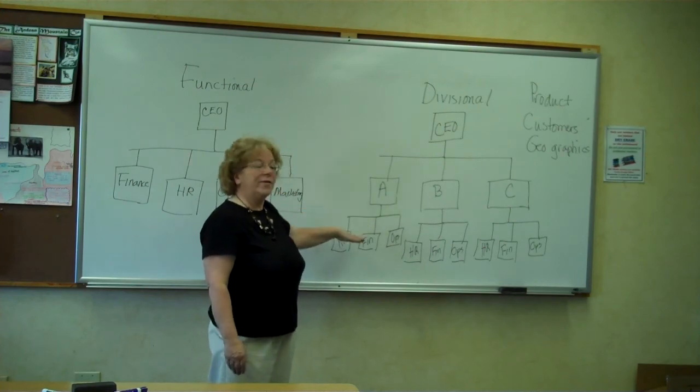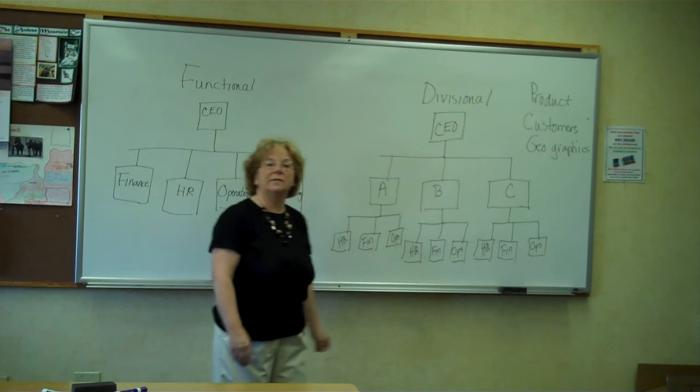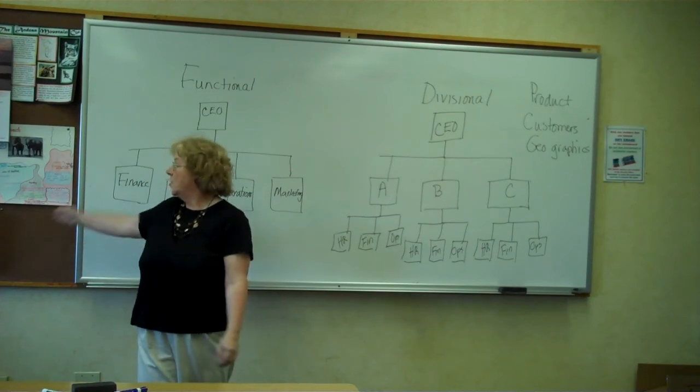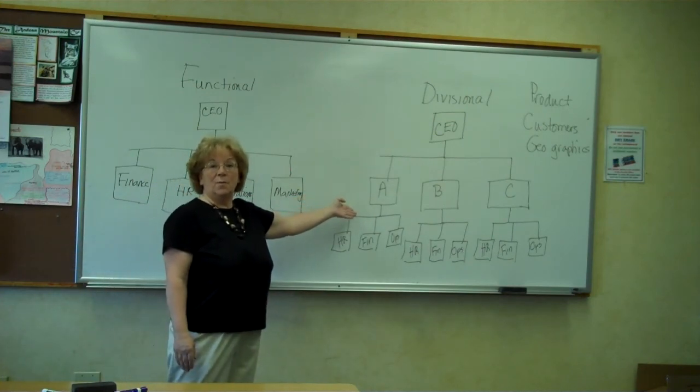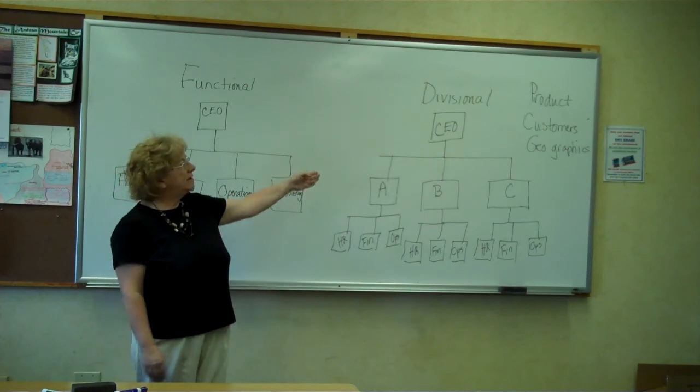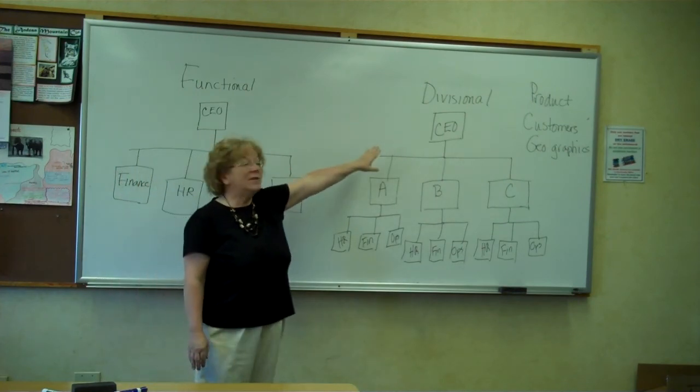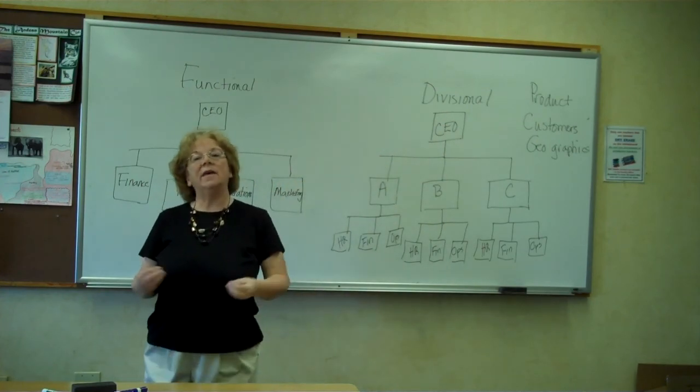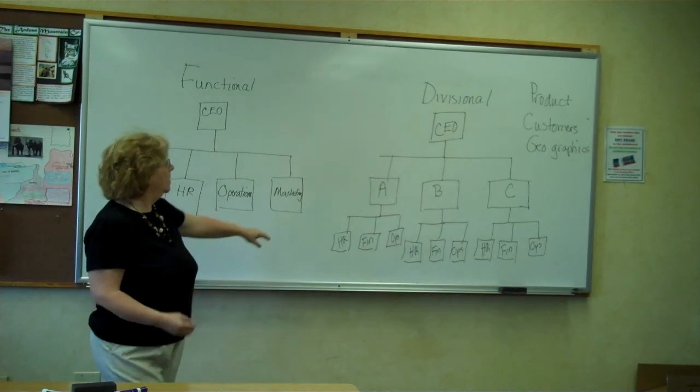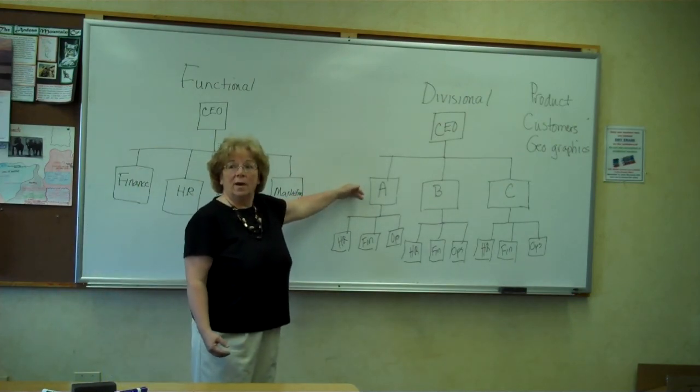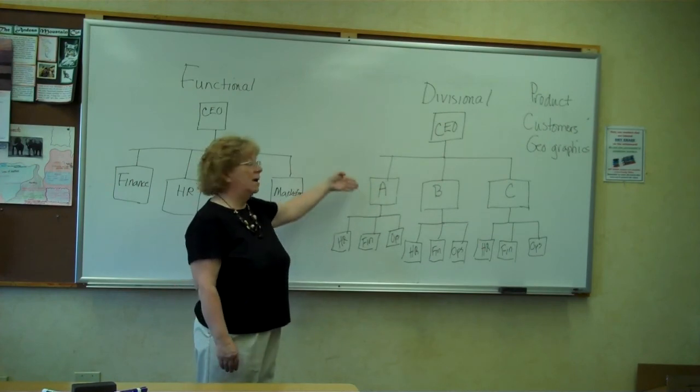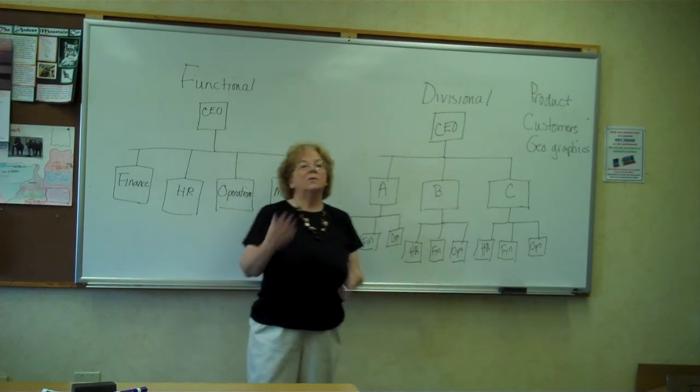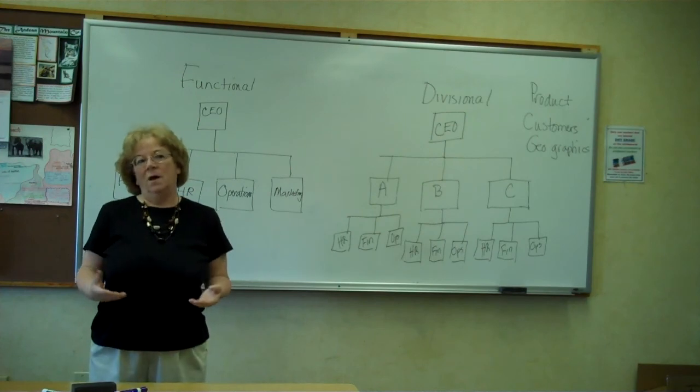Disadvantages for this type of a structure are that you are duplicating various functional areas. So it tends to be more costly. Having three human resource departments, as opposed to one, is more expensive for the company, usually. Another disadvantage to the divisional structure happens really at the top management level. They have competing interests that they have to balance as they make business decisions. So they could, for example, be faced with a decision that would be very good for Division A, but detrimental to Division B. So as a management team, they have to learn to balance those different operations.